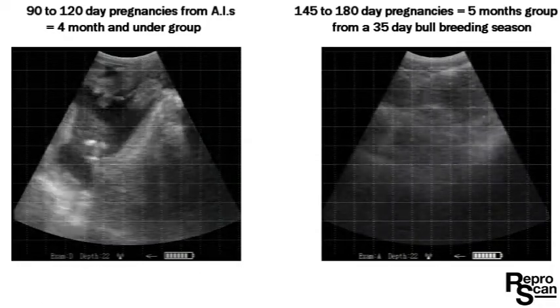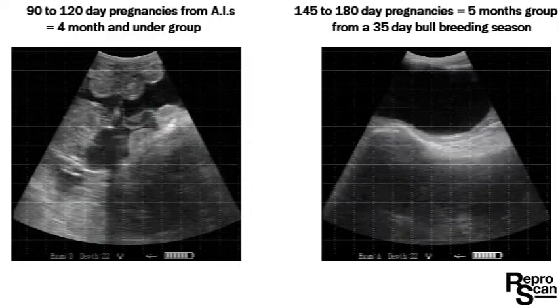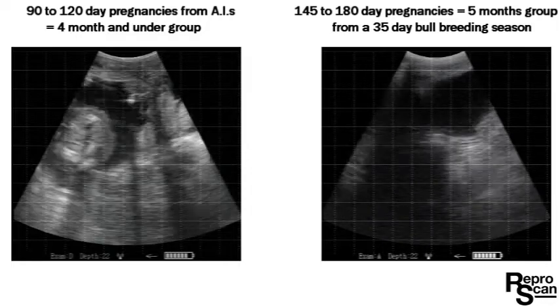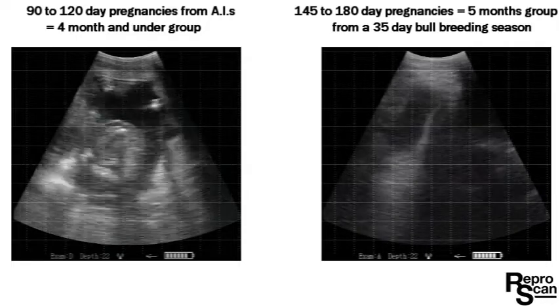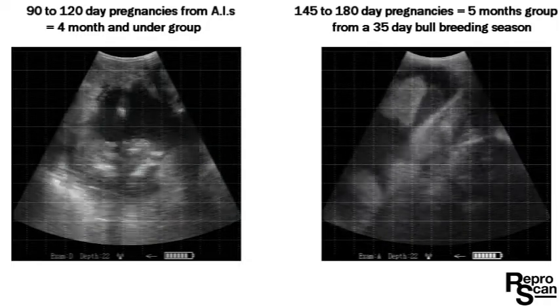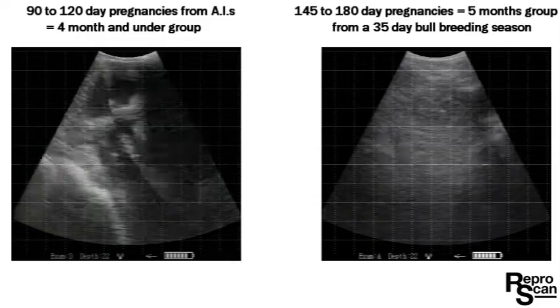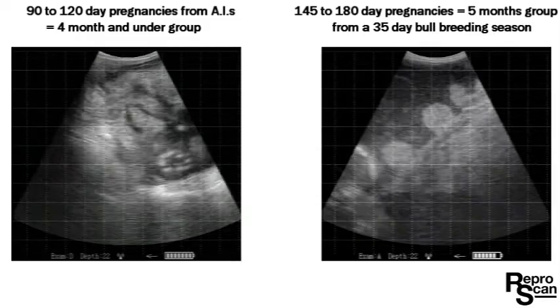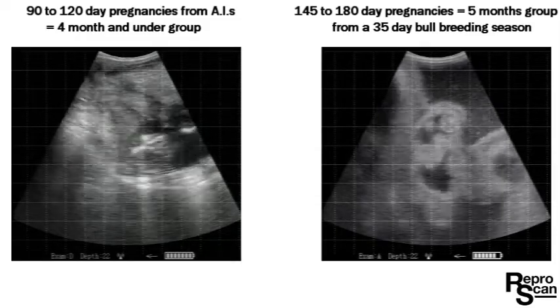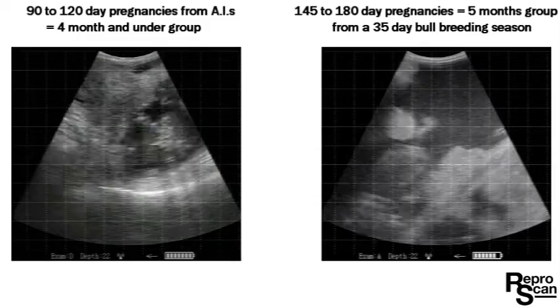Two square placentomes up to two squares — four centimeters — and on the right, again, a little larger placentomes and debris in that amnion.